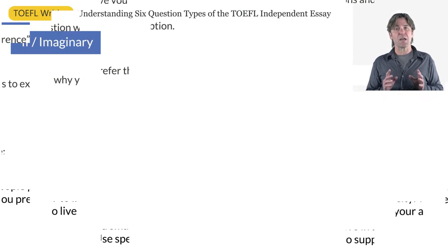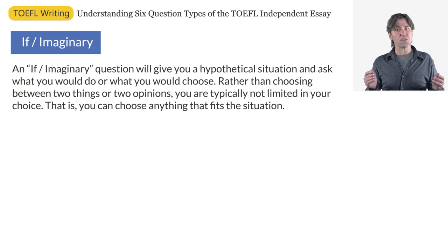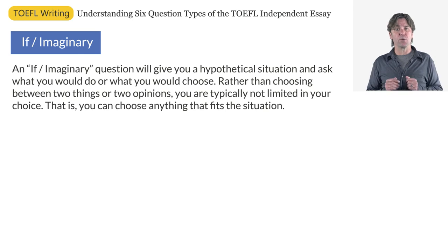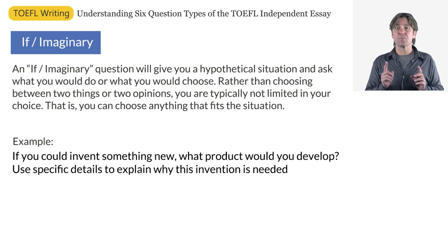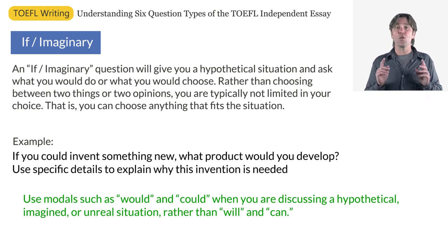Moving along to our next question type: the if or imaginary question. An if or imaginary question will give you a hypothetical or imagined situation and ask what you would do or what you would choose. Rather than choosing between two things or two opinions, you are typically not limited in your choice — that is, you can choose anything that fits the situation. Here is an example: If you could invent something new, what product would you develop? Use specific details to explain why this invention is needed. Remember, when you write your response to an if or imaginary question, you should use modals such as would and could when discussing a hypothetical, imagined, or unreal situation, rather than will and can.